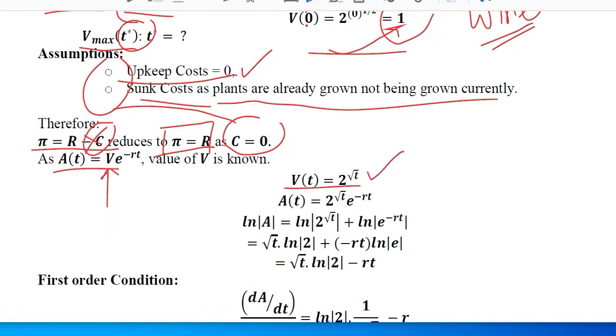We have the value of V, so we can put this in the formula. This is the value of V which was given, and this is the formula of present value. So we are going to put the value here. As you can see, this V is now substituted with this value.